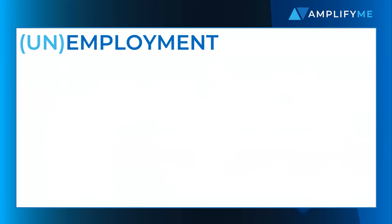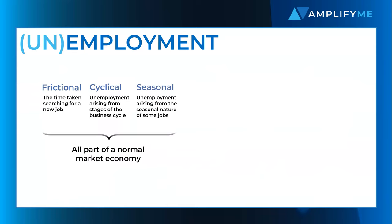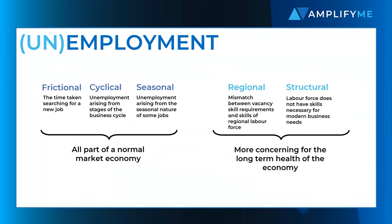Economists love making lists and they have come up with a wide range of different types of unemployment. Some, like frictional unemployment, are actually a sign of a healthy economy. Others, like cyclical and seasonal unemployment, are part of a normal business cycle. Others, like structural and regional unemployment, are more serious and suggest longer-term issues in a country's economy.